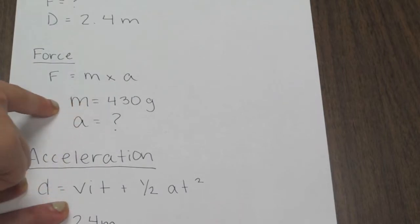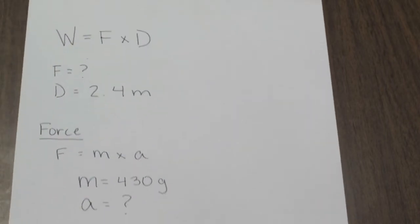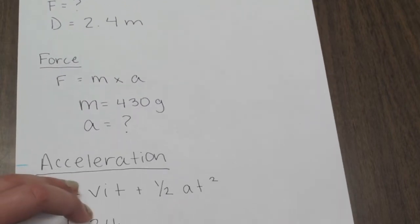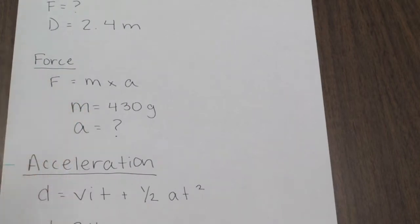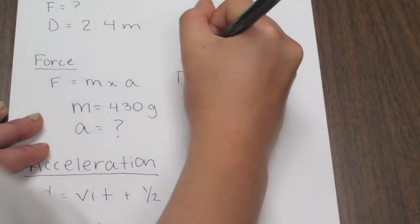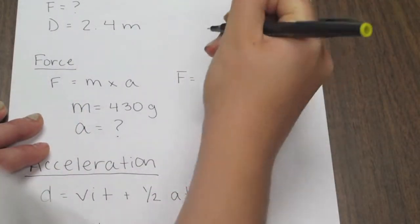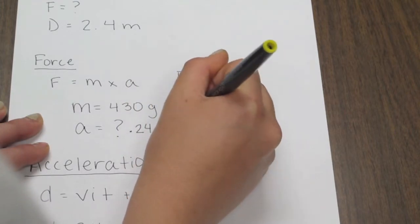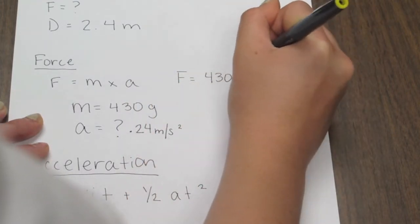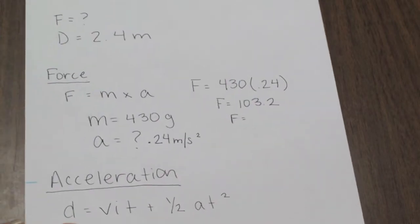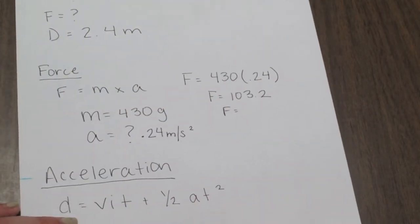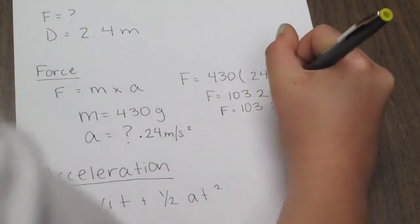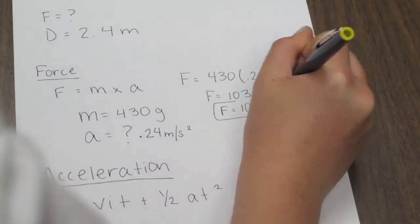Now use acceleration to find force. Force equals mass times acceleration. The mass is 430 grams and the acceleration is 0.24 meters per second squared. Plug it into the formula to get F equals 430 grams times 0.24 meters per second squared. The force ends up being 103.2, which rounds to 103 newtons.